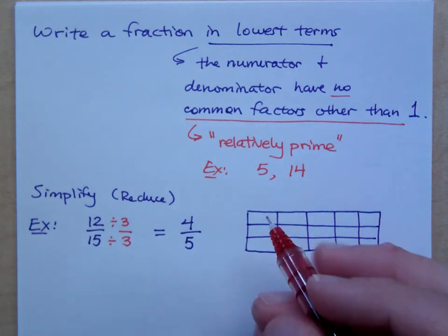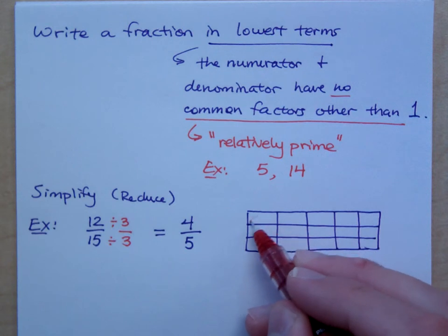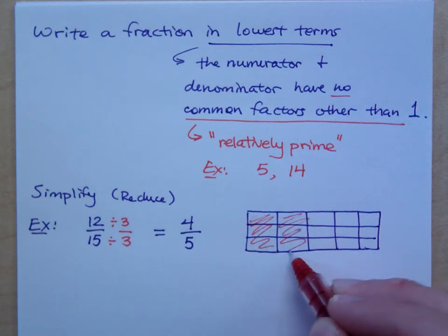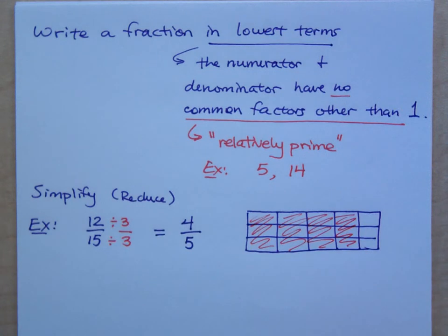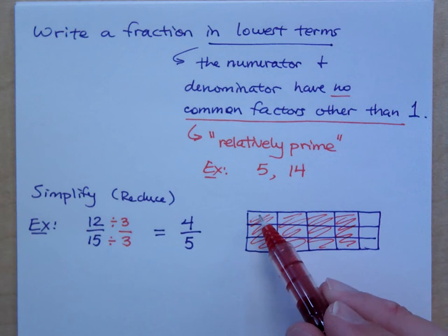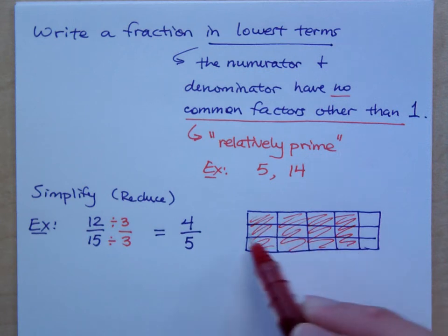Now, if I talk about 12/15, that means I'm talking about coloring in 12 of these guys, right? 12 of the 15? Do you all agree? I've got 4 columns of 3 rows, so that's 12 out of a total of 15.